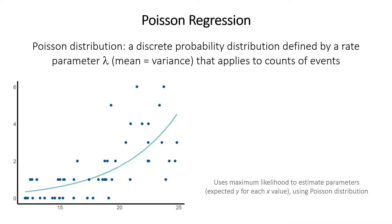The Poisson distribution is a type of probability distribution for discrete or whole number data. It often describes the counts of things and has a single parameter called the rate, given the symbol lambda. That parameter measures both the mean and the variance, which must be equal to each other. This is a good property for counts because the variance of counts typically does increase as the mean value goes up.